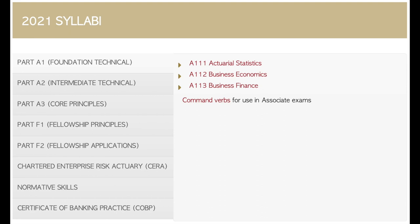How actuarial science works is there is an international actuarial association — a global organization that sets the actuarial education standards. Then each actuarial society or institute in each country will take that syllabus and design their own, flavoring it towards their own regulations and economic climate, because actuaries are very much focused on local stuff — local regulations, local tax practices, and all those kinds of things.